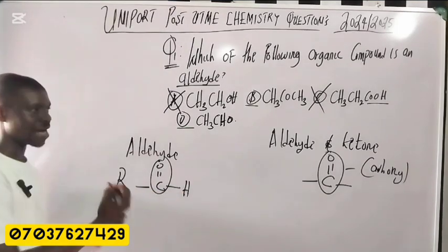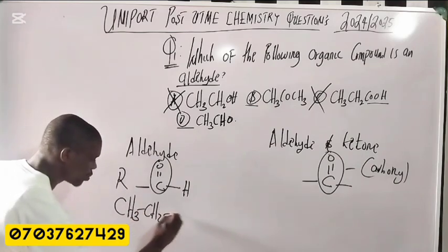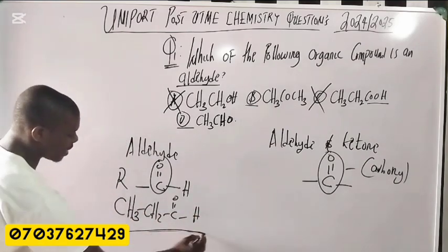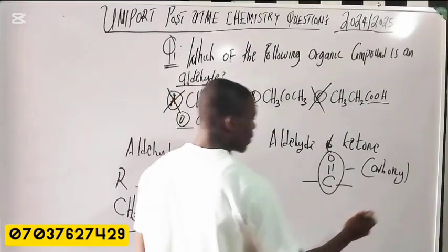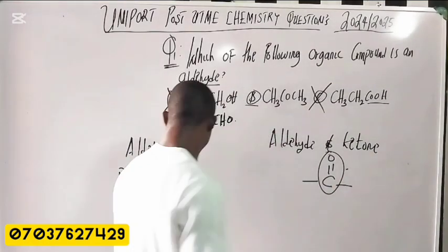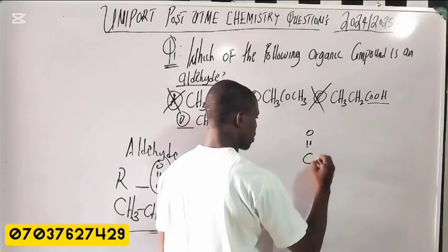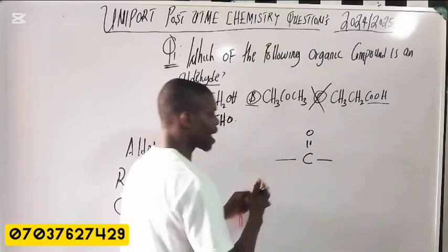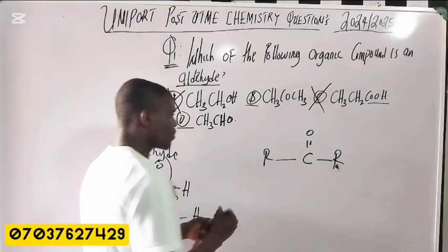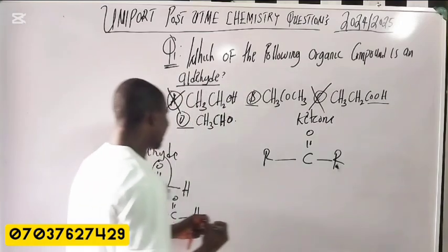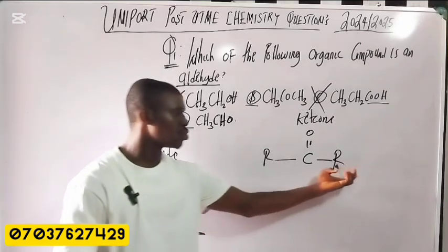An aldehyde can either be a terminal-type carbon and so on. For example: CH3CH2C=O with H — this is an aldehyde functional group. Now what about ketone? As I told you, ketone and aldehyde have the same carbonyl group, but in the ketone there is no hydrogen attached to the carbonyl carbon. Instead, we have two alkyl groups on either side.